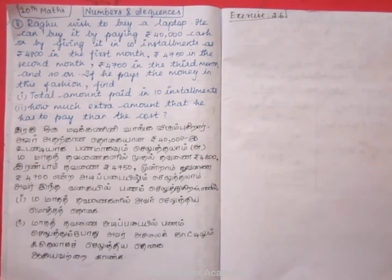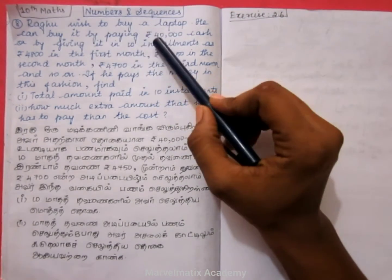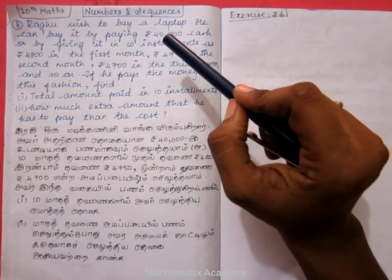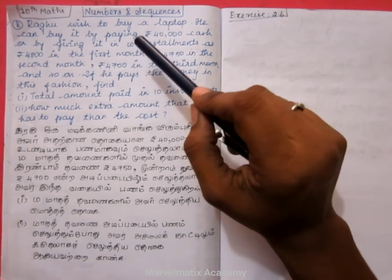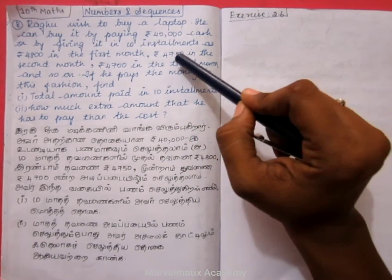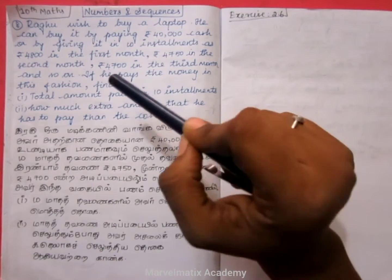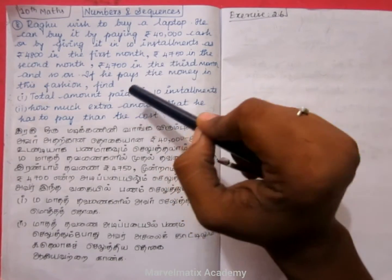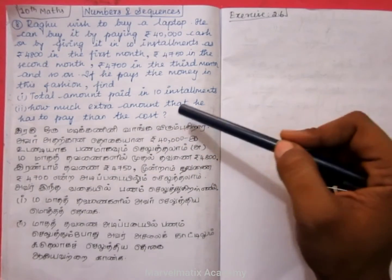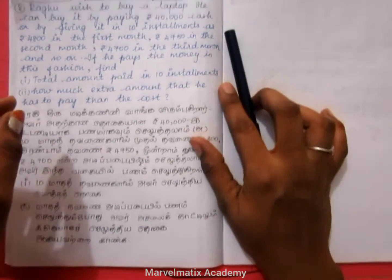Question 9: Raghu wishes to buy a laptop. He can buy it by paying 40,000 cash, or by giving it in 10 installments as 4,800 in the first month, 4,750 in the second month, 4,700 in the third month and so on. Find the total amount paid in 10 installments and how much extra amount he has to pay than the cost.